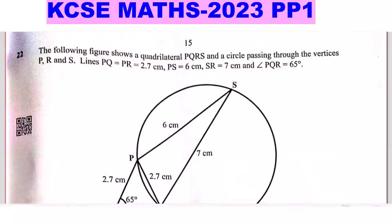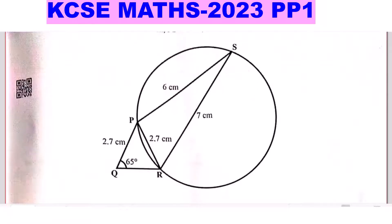Question 22. The following figure shows a quadrilateral PQRS and a circle passing through the vertices P, R, and S. PQ equals PR equals 2.7 cm, PS equals 6 cm, SR equals 7 cm, and angle PQR equals 65 degrees. The diagram is shown with all measurements indicated.